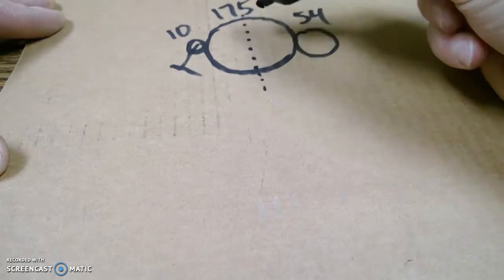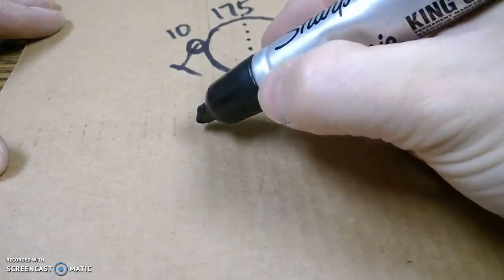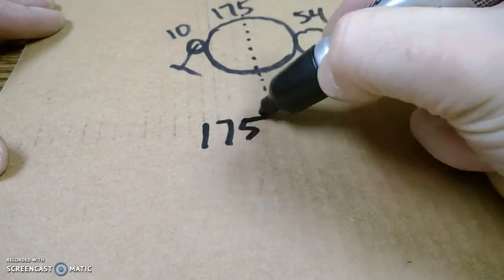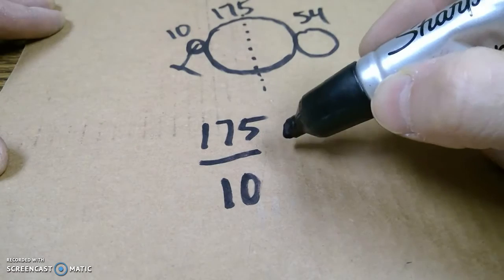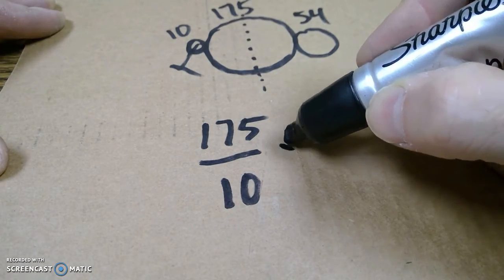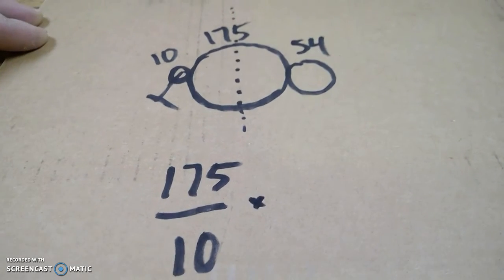First one is going to be driven over driver: 175 over 10. This gets multiplied by the next system.